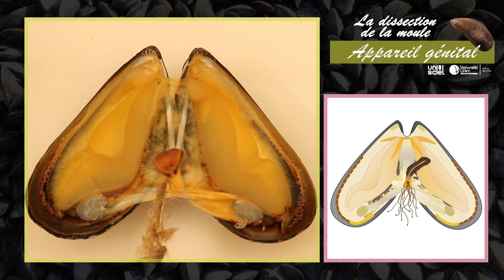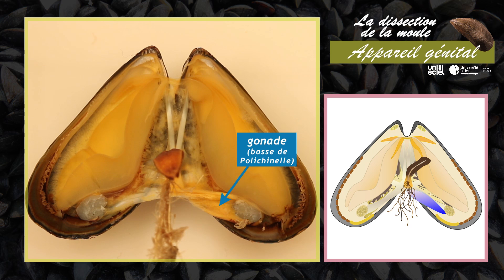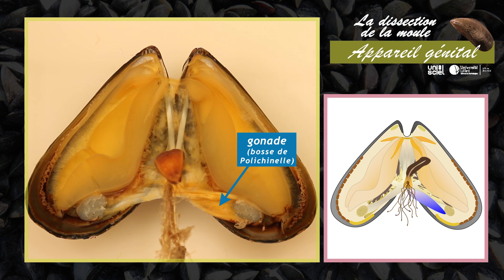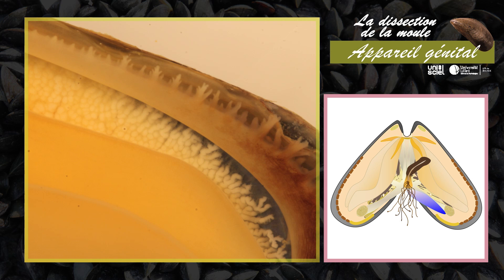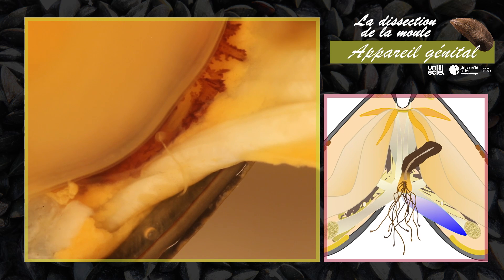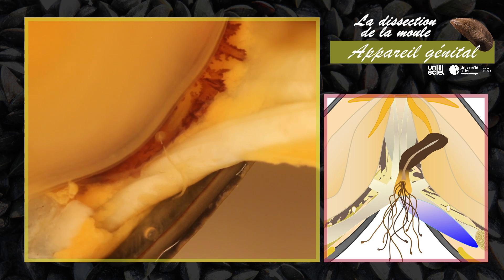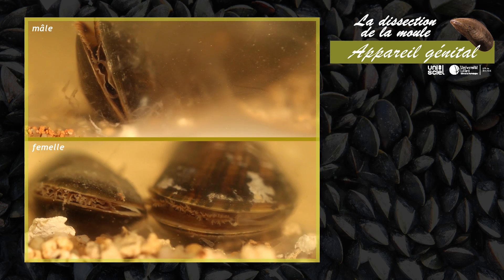Chez la moule, les sexes sont séparés, mais il n'y a pas de dimorphisme sexuel. La gonade unique, située à l'arrière du bissus, forme une protubérance appelée bosse de polychinelle. À maturité, les gamètes sont stockées dans la gonade et aussi dans le manteau. Les femelles et les mâles émettent les gamètes par les orifices urogénitaux et les expulsent dans le milieu par la boutonnière.